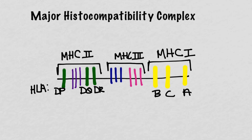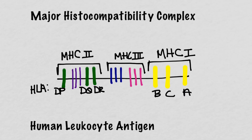The MHC genes are grouped into three classes: class 1, class 2, and class 3. Within the same class, all molecules have the same structure, function, and tissue distribution — so if you learn one, you learn them all. The proteins they encode for are collectively called the human leukocyte antigens, or HLAs. This is a bit of a misnomer, as HLA molecules are not only found on leukocytes; in fact, they can be found on nearly every cell in the body.